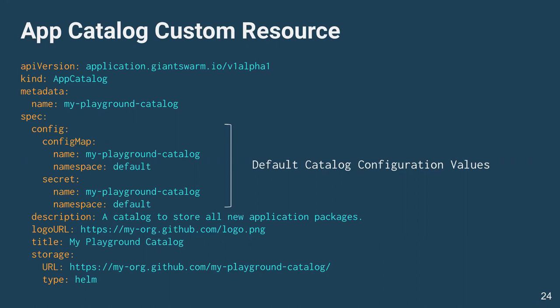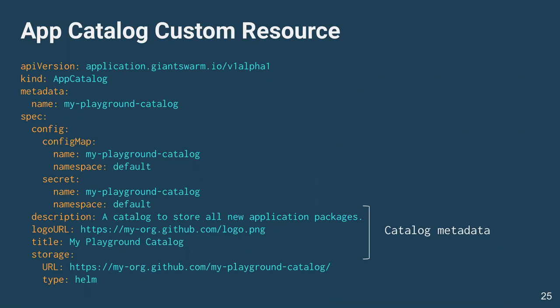In the App Catalog custom resource, which I apply to the Kubernetes API on my control plane (meta) cluster, I define the default catalog configuration values — the values that will be applied to all apps stored in this catalog. Then there's the metadata I mentioned: logo URL, title, description. Finally, we have the storage section — where these application chart packages are actually living. In this case there's a repository I created. I define the type as Helm because that's what we're using right now, but in theory we could swap it out for another tool if needed.